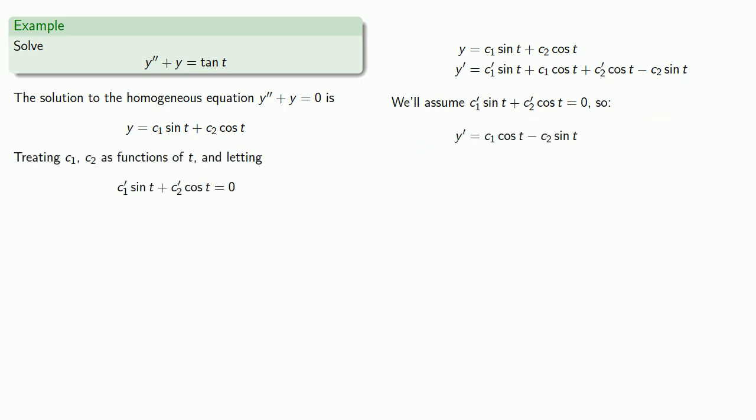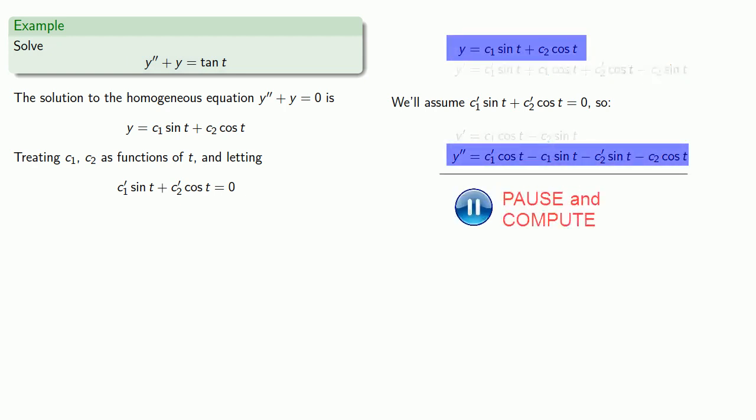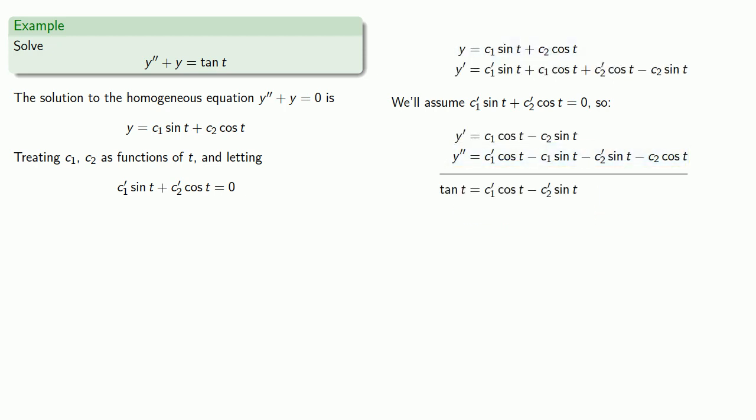But we still need to find our second derivative so we'll find that. Now we want y double prime plus y to equal tangent of t. So take y and add y double prime and that gives us tangent equals c1 prime cosine t minus c2 prime sine t. And there's a second equation that involves c1 prime and c2 prime.